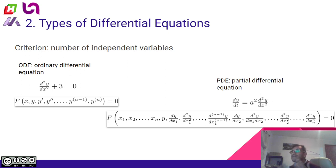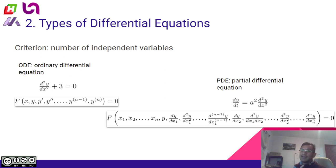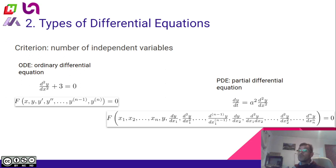So the first criterion is the number of independent variables. If our differential equation depends only on one independent variable, we are going to have an ordinary differential equation, or ODE. And if we have more than one independent variable, we are going to have a partial differential equation, or PDE.